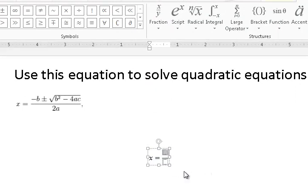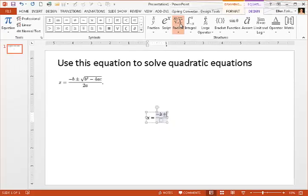So I'm going to click inside the top box and type minus b. And then I need the plus or minus symbol, which is right up here. I'm just going to click it. The next thing I need is a radical. So I have my radicals here. I'm just going to choose this.